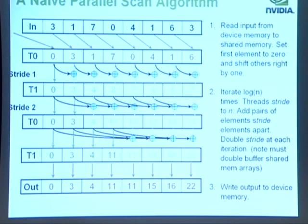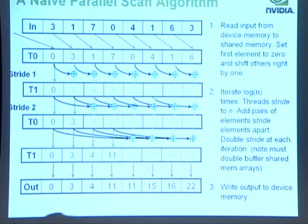This is what I'm calling a naive parallel scan algorithm — on some computers like the connection machine this would be the efficient algorithm, but on a GPU it's not very efficient. We read input from device memory to shared memory, shift it right one element and insert a zero for an exclusive scan. Then we iterate log N times with a doubling stride — each thread reads the element stride positions to the left, adds it to its own element, and writes the result to its own location. This requires double buffering since threads overwrite their results, using two arrays T0 and T1 in shared memory.